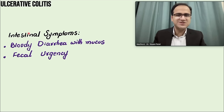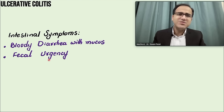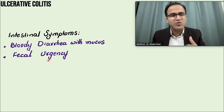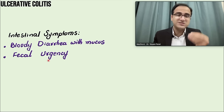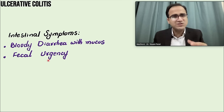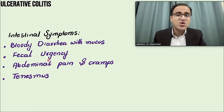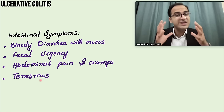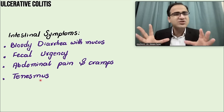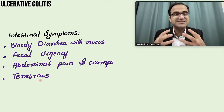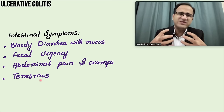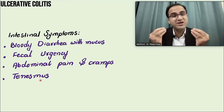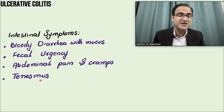The classical symptoms with which the patient would come to you are bloody diarrhea with mucus and fecal urgency. The patient would say: doctor, I have this abdominal pain and whenever I get it, I go to the washroom and pass stools — and all I pass is blood. There is blood and mucus in stools, abdominal pain, cramps, and tenesmus — a sense of incomplete evacuation, feeling the need to pass stools even when the rectum is empty.